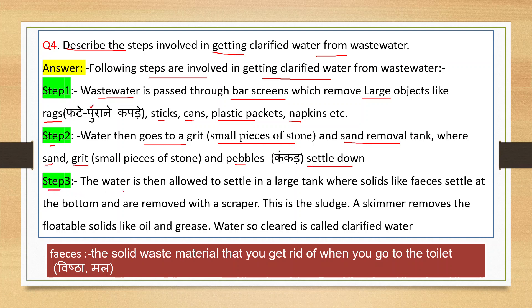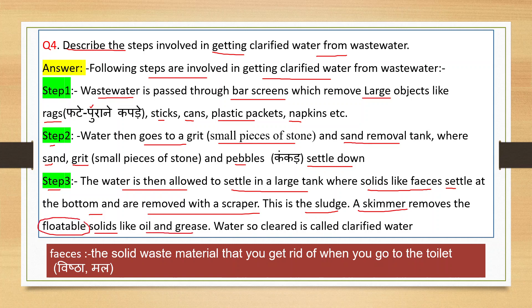Step 3: The water is then allowed to settle in a large tank where solids like feces settle at the bottom and are removed with a scraper - this is called sludge. A skimmer removes the floatable solids like oil and grease from the top. Water so cleared is called clarified water. Feces means the solid waste material discharged from the body when you go to the toilet.